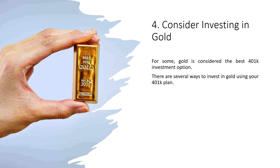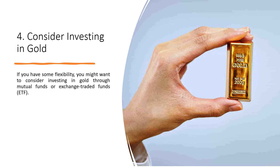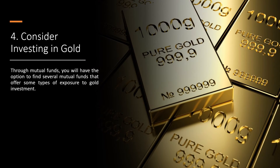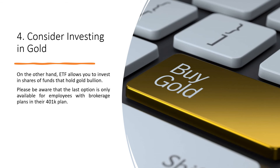4. Consider Investing In Gold. For some, gold is considered the best 401k investment option. There are several ways to invest in gold using your 401k plan. If you have some flexibility, you might want to consider investing in gold through mutual funds or exchange-traded funds (ETFs). Through mutual funds, you will have the option to find several mutual funds that offer some types of exposure to gold investment, by giving you the opportunity to act as a stockholder in gold mining or gold mining related companies. On the other hand, ETFs allow you to invest in shares of funds that hold gold bullion. Please be aware that the last option is only available for employees with brokerage plans in their 401k plan.